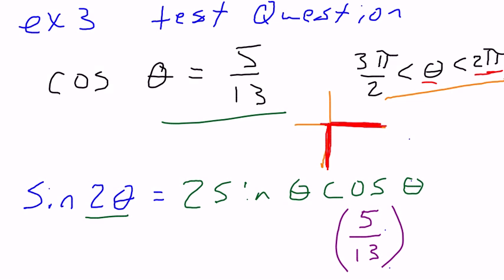Which is 360, which is going straight across. So automatically, that means our angle, our triangle, has to be down here. And it's going to have an x value of 5, and a hypotenuse of 13, because remember, cosine is x over r.